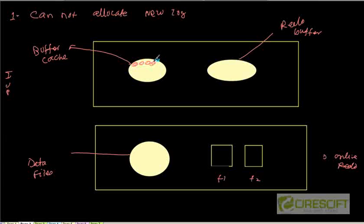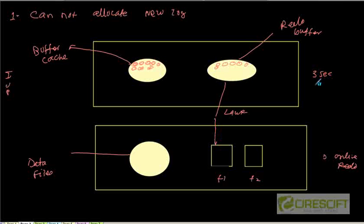So we are filling this buffer cache, making it dirty. At the same time, we are writing the redo information into the redo buffer. Eventually, LGWR — which is the log writer — is going to write to file F1, either every three seconds, whenever somebody does a commit, or when the redo buffer is one-third filled. A lot of transactions are going on: buffer cache is modified, redo buffer is created, and LGWR is writing to these files.